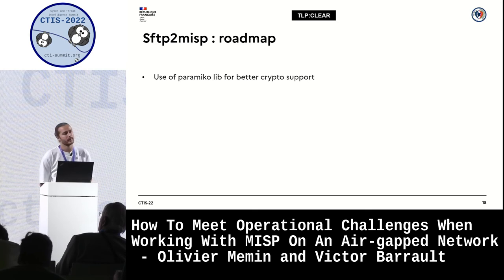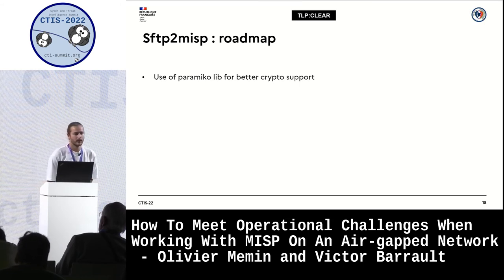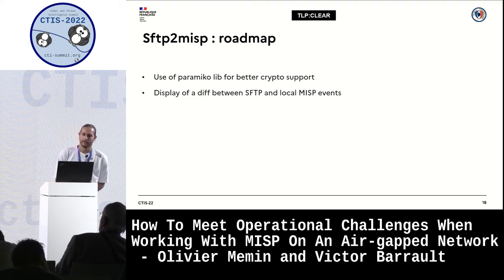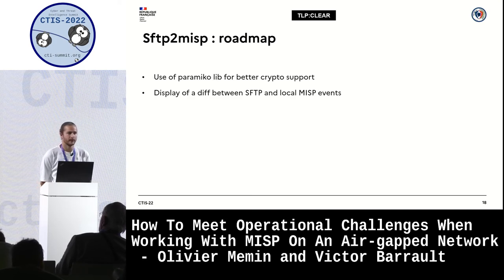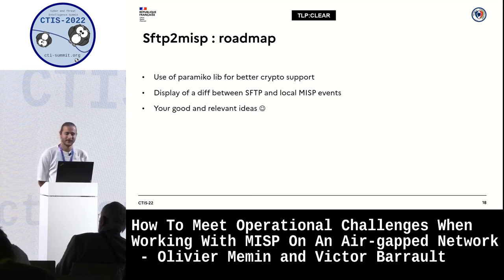After the demo, let's have a few words about the roadmap. First, we would like to use the Paramiko library for Python instead of the SFTP binary, for simplicity of use and to support more crypto suites. Secondly, we were asked to have the possibility to display a diff between events already on the MISP server and those on the SFTP server before processing any actions. And finally, your ideas are always welcome.